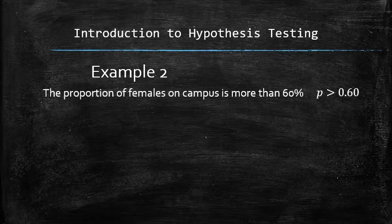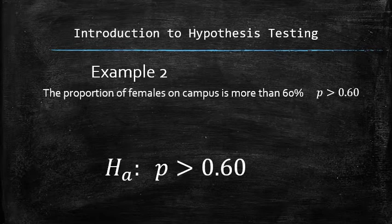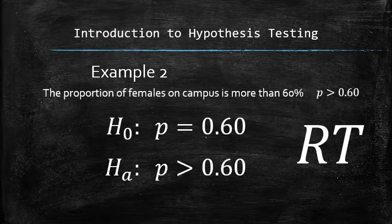In this example, the claim is in the form of an inequality. Therefore, it must be stated as an alternative hypothesis. Therefore, the null hypothesis is p equals 0.6 and the test is right tail.